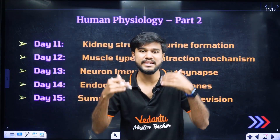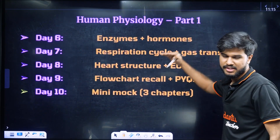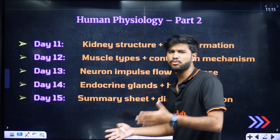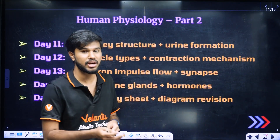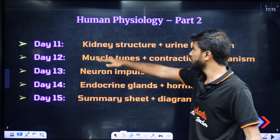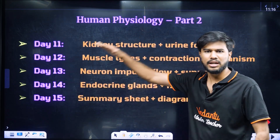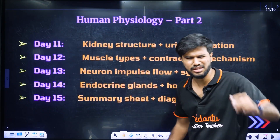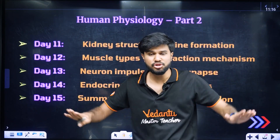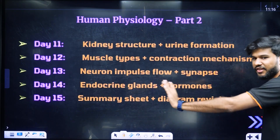It's easy to move to the next step in phase 4. Chemical coordination is important. In just 25 days, you will have covered botany or zoology concepts. By day 15 in phase 3, we will finish human physiology.